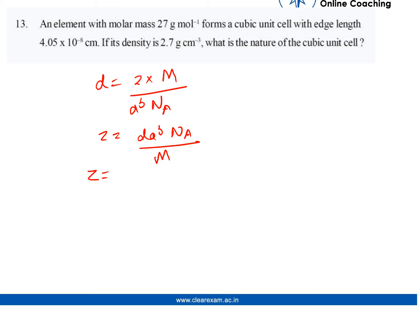Z = (2.7 g/cm³ × 6.022 × 10²³ mol⁻¹ × (4.05 × 10⁻⁸ cm)³) / M. When calculated, we get the answer 3.999, which is approximately equal to 4.